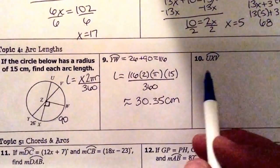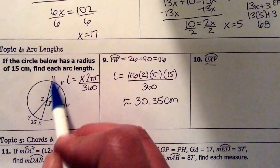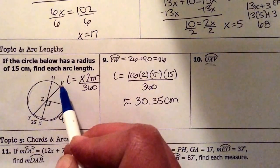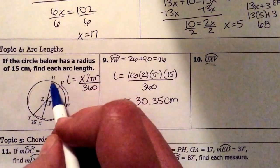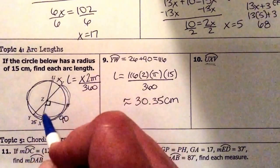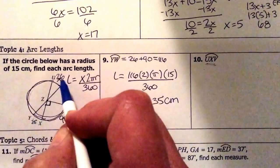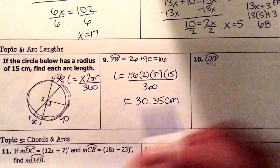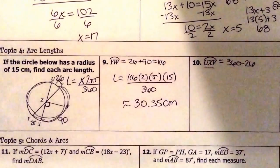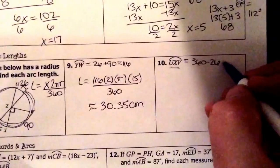The next one they want us to find is arc UXV. So if I go from U through X all the way to V, I need to figure out I'm basically saying it's the whole circle take away this part right here. And I do know that this part is 26 because they're congruent to each other. So this is really 360 take away 26. That's going to give me 334.